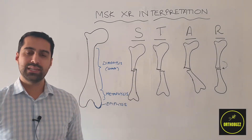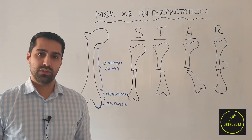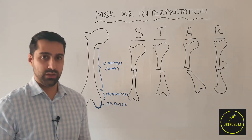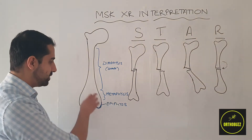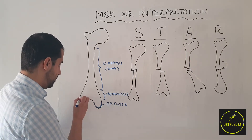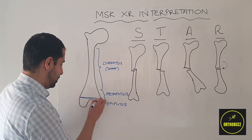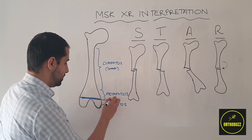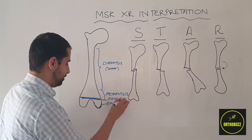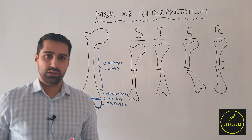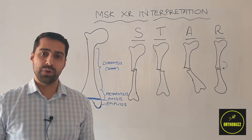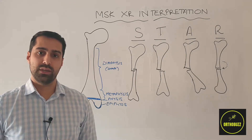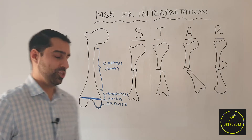In skeletally immature patients — those that are children — there will also be a transverse lucent area close to or between the epiphysis and the metaphysis. This is the growth plate, termed the physis. It appears lucent because it's composed of collagenous and cartilaginous tissue rather than calcified tissue.